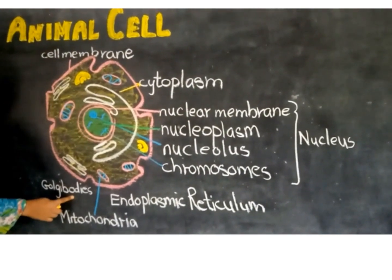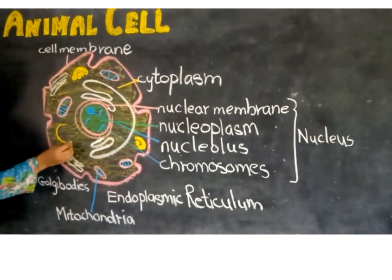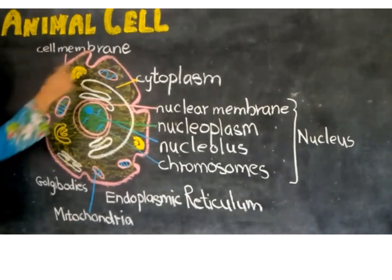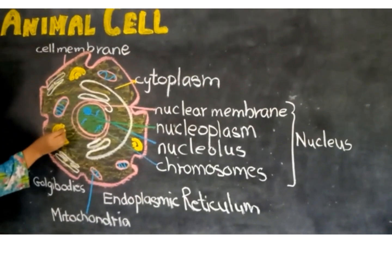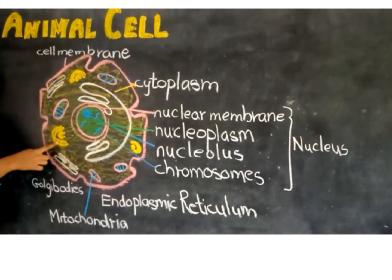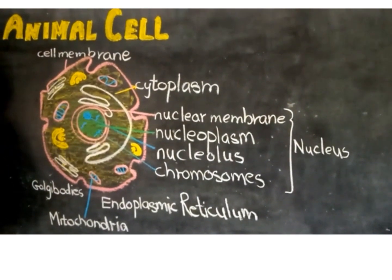The Golgi bodies or Golgi apparatus are cup-shaped or plate-like structures present inside the cytoplasm. The function of the Golgi bodies is to synthesize, store, and secrete substances for the cell.